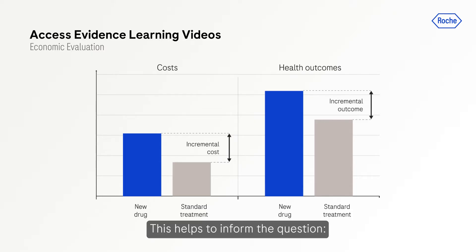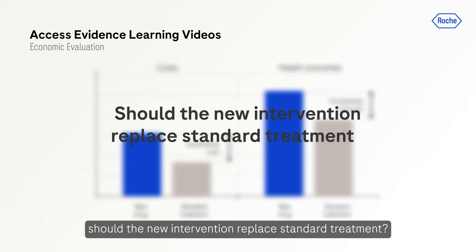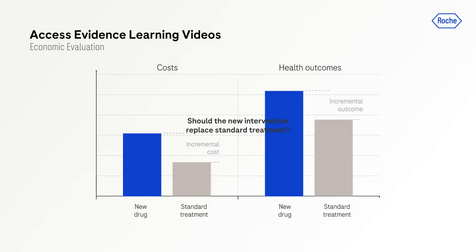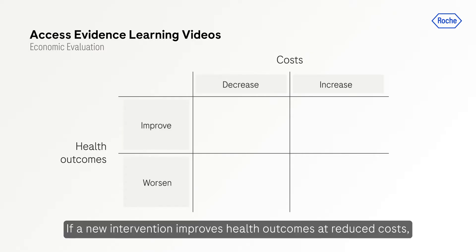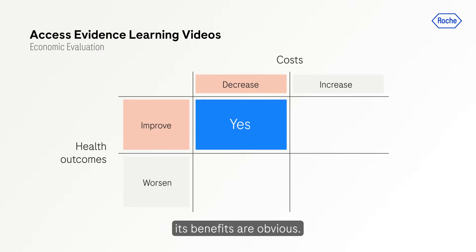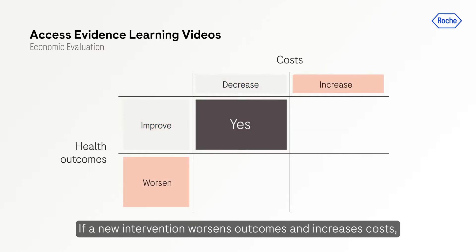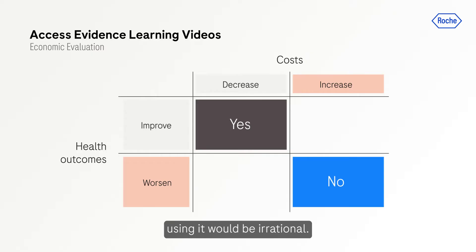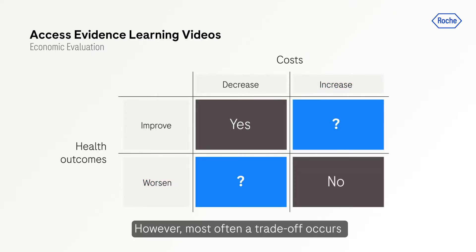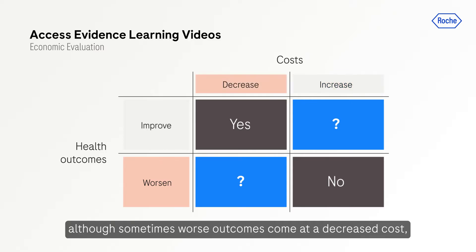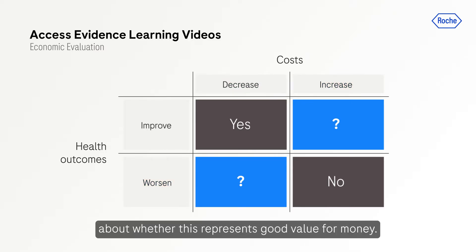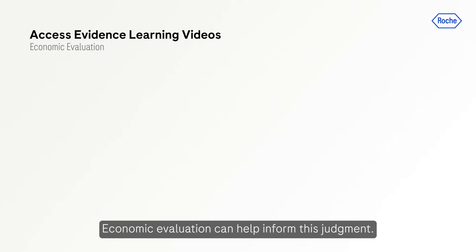Incremental analysis helps to inform the question: should the new intervention replace standard treatment? In some cases the answer is clear. If a new intervention improves health outcomes at reduced cost, its benefits are obvious. And if it worsens outcomes and increases costs, using it would be irrational. However, most often a trade-off occurs between costs and health outcomes — usually improved outcomes at an increased cost, although sometimes worse outcomes at a decreased cost — and a judgment must be made about whether this represents good value for money. Economic evaluation can help inform this judgment.